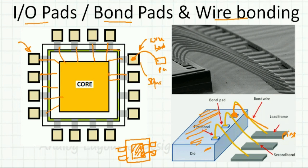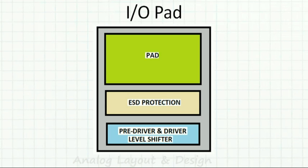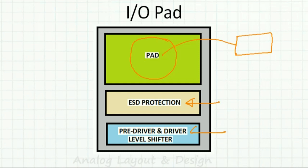Bond pads are generally around 50 micron by 50 micron, 80 micron by 80 micron, or up to 100 micron by 100 micron. IO pads are placed on the periphery, and along with the IO pad there is standard circuitry added. Every pad comes with this circuitry. The basic pad has a solder ball connecting to the external pin. Additionally there is ESD protection circuitry, drivers and pre-drivers to drive large capacitive loads, and level shifters required between core and IO.